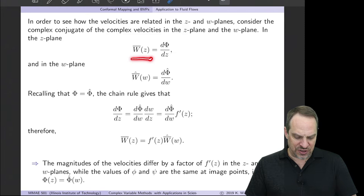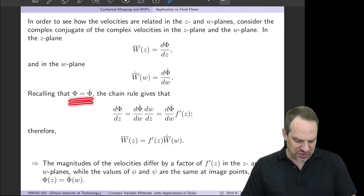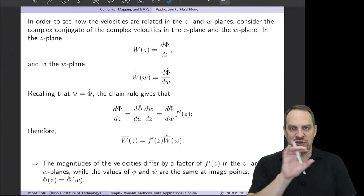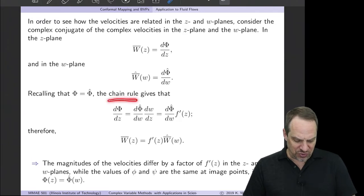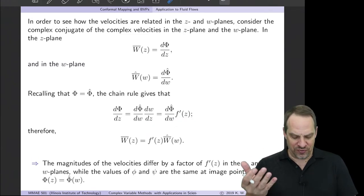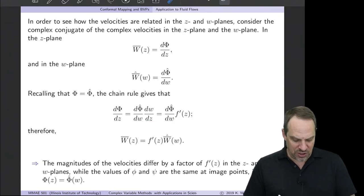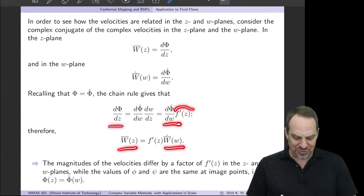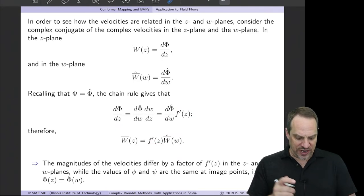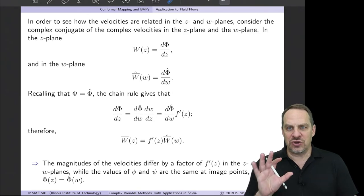So here is the complex conjugate of the complex velocity in the z plane. And so that's just dΦ̄/dz. We can do the same in the w plane. So that's just dΦ̄ hat/dw. Well, from the chain rule, because Φ is equal to capital Φ hat, again, the values are the same at the image points in the two planes. It's just that the points have moved around. The chain rule tells us that dΦ̄/dz is just dΦ̄ hat/dw times dw/dz. But dw/dz, what is that? That's f prime of z. W is the mapping itself. And so dw/dz is the derivative of that mapping. So then we can relate the complex conjugate of the complex velocities in the z and the w plane. They're related by this factor, f prime of z. So whereas the capital Φ values are the same, the W values aren't, the velocities aren't, they differ by the value of f prime of z at each point.